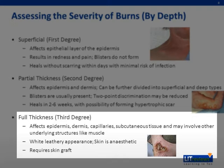In a full thickness burn, the epidermis, dermis, and subcutaneous tissue are destroyed, including the capillaries and nerves. There may also be involvement of deeper underlying tissue like the muscle and bone. Flame and prolonged immersion are possible causes. They have a white, leathery appearance with occasional charred areas. Despite being more serious than superficial burns, they do not cause pain as the nerves are damaged. A skin graft is required for full thickness burns.